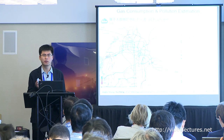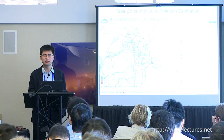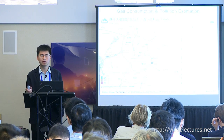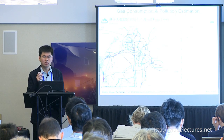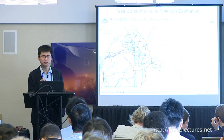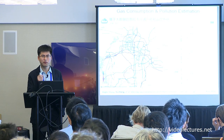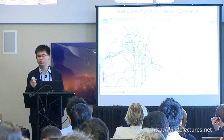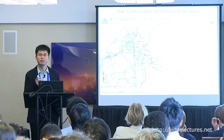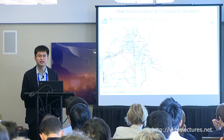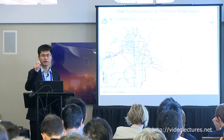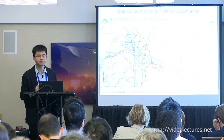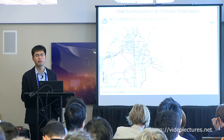Traffic volume is defined as the number of vehicles traversing a given road segment in a given time slot. When there is traffic congestion, the traffic volume is actually small, not large — that may break your intuition. Travel speed, traffic density, and traffic volume are three factors affecting each other; knowing travel speed alone does not tell you the traffic volume.